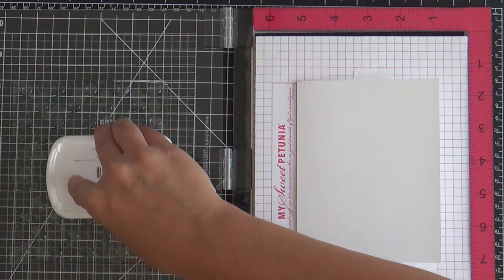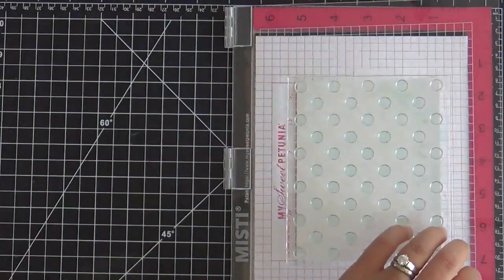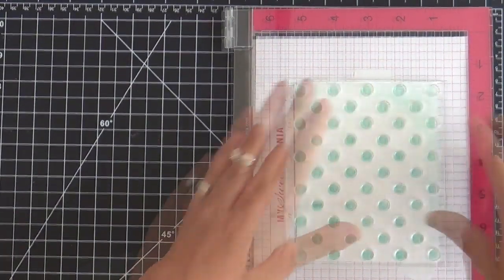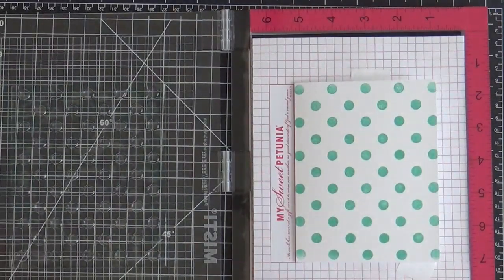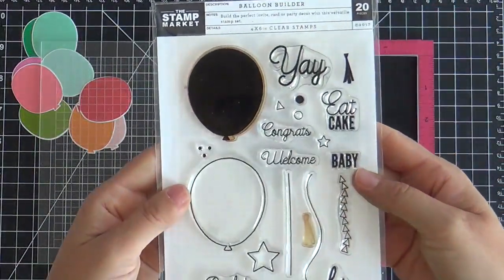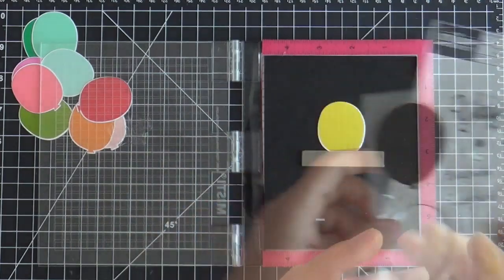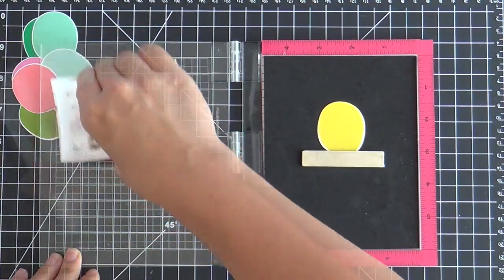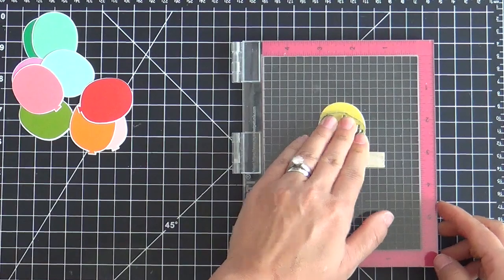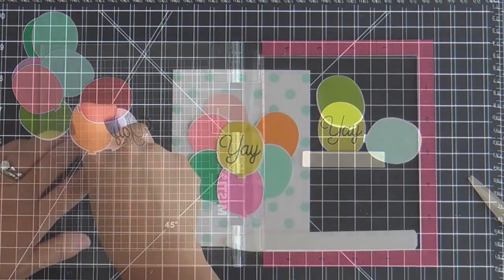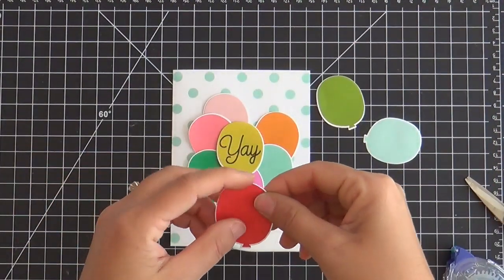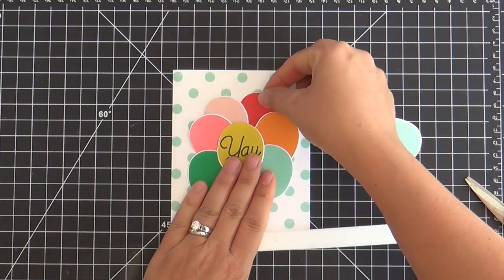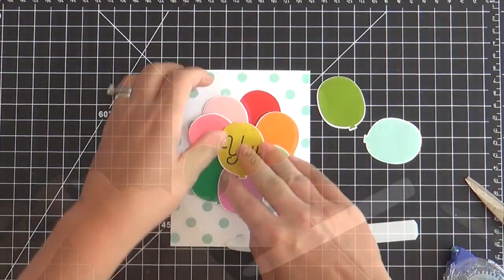For the background what I'm using is called the Perfect Polka Dots background stamp. This is also by the Stamp Market. I inked it up with Sea Glass ink and this 'yay' is from the Balloon Builder stamp set. Pulling out some of my favorite old Stamp Market stamp sets to put this all together. I stamped the 'yay' right on that Citrine balloon and I made myself a little balloon cluster.